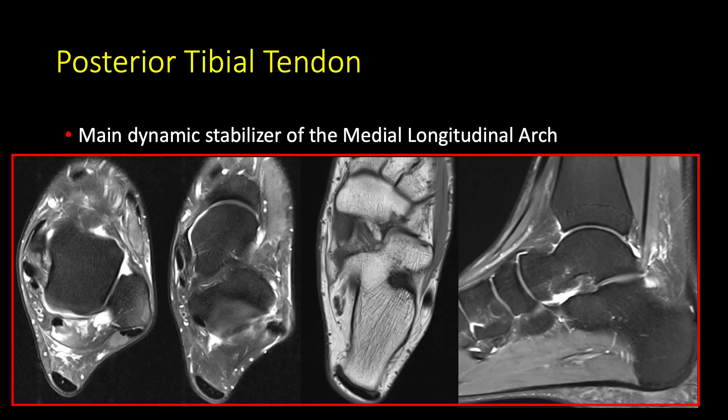The posterior tibial tendon is the main dynamic stabilizer of the medial longitudinal arch. I'm going to highlight that in red all the way to the main insertion onto the medial pole navicular. In the sagittal image, in this normal foot, we see a line drawn through the long axis of the talus intersects, if continued, the long axis of the first metatarsal. This is someone who has a preserved medial longitudinal arch. I've highlighted in blue the supramedial component and the medial plantar oblique component of the spring ligament. Notice that the supramedial spring ligament is located between the deep surface of the posterior tibial tendon and the medial talar head.